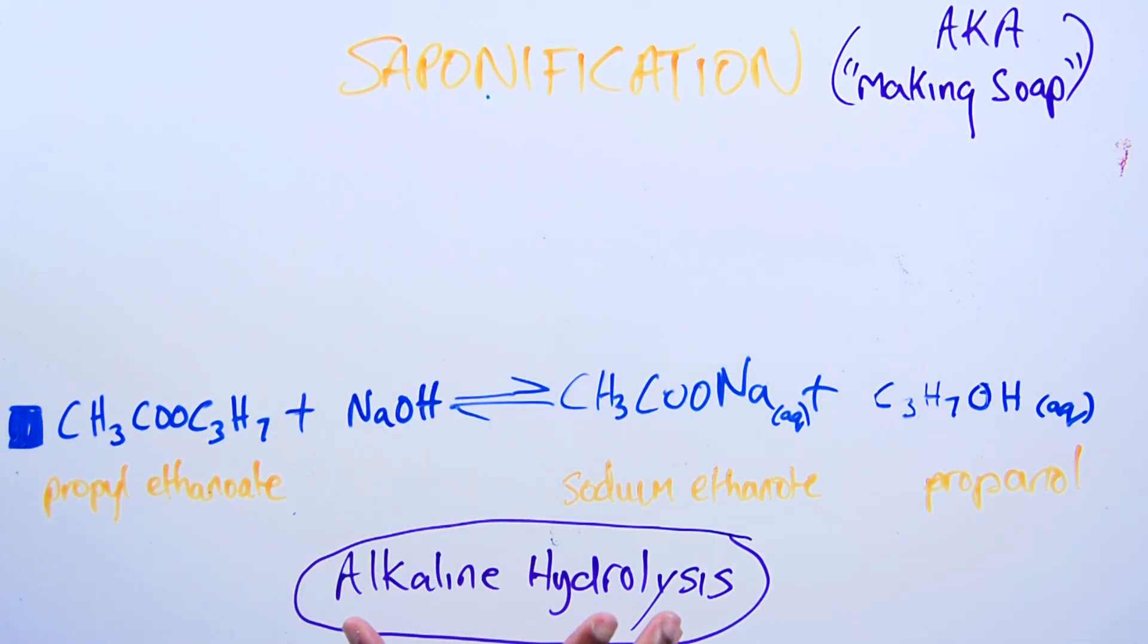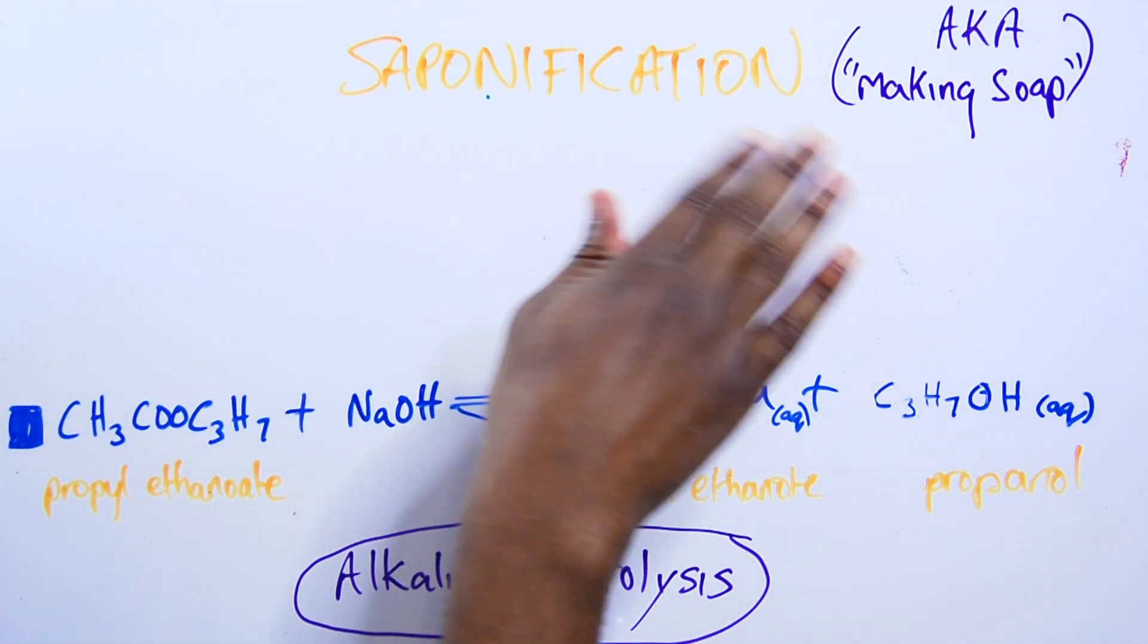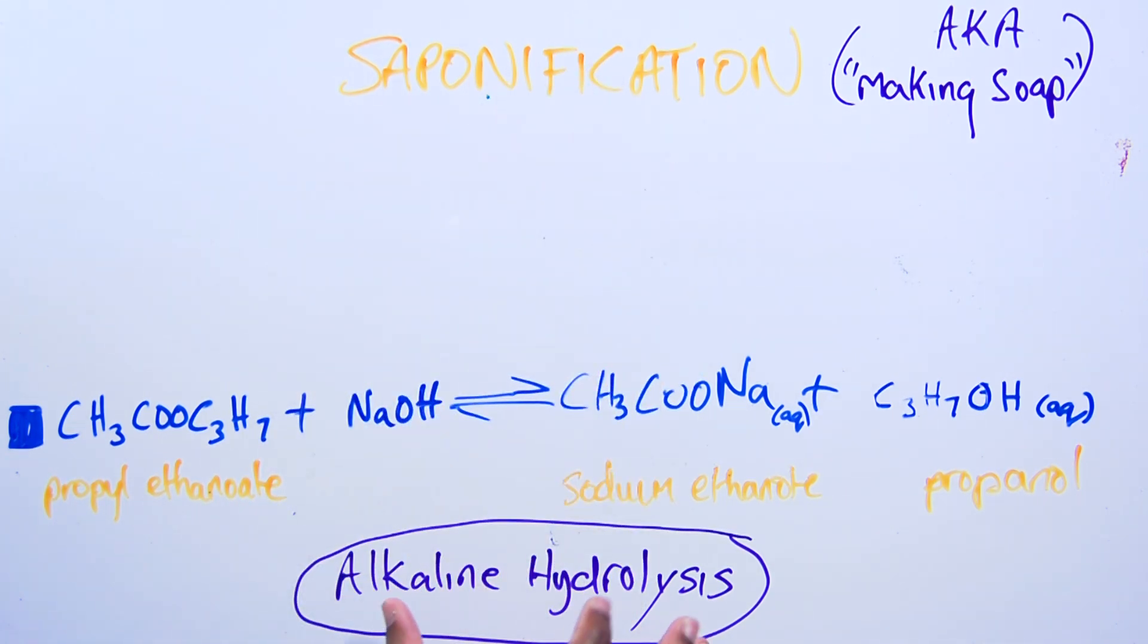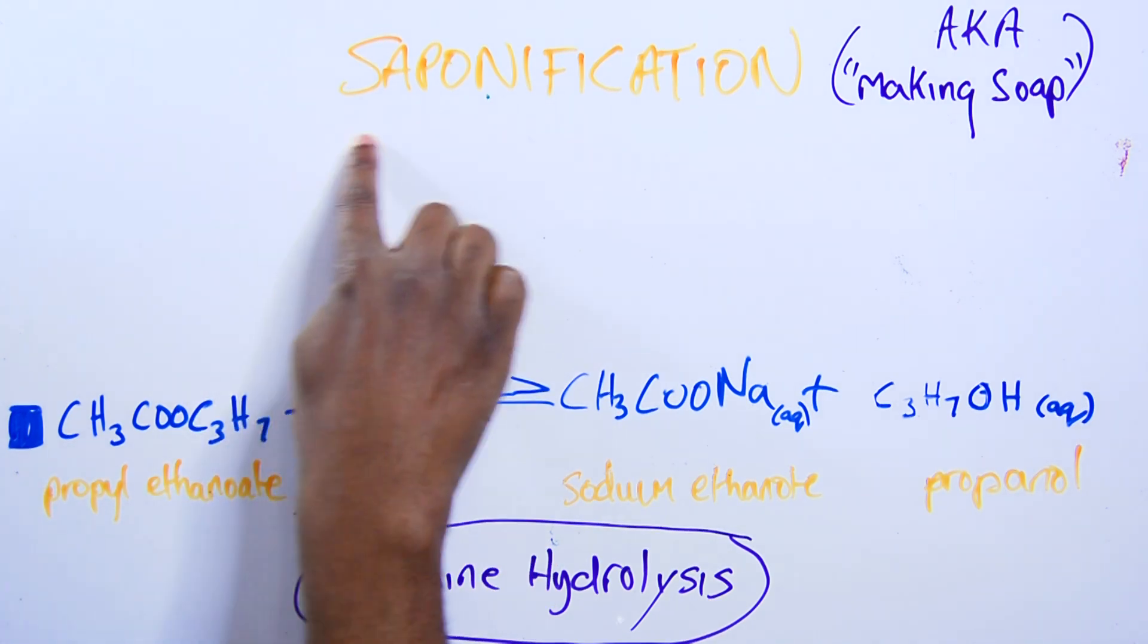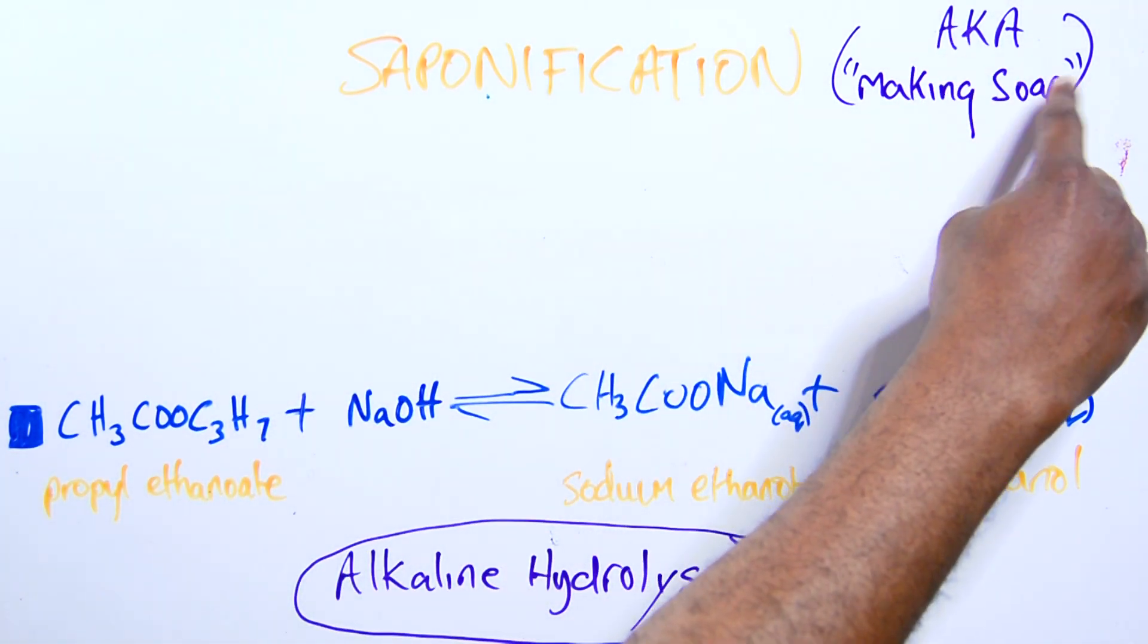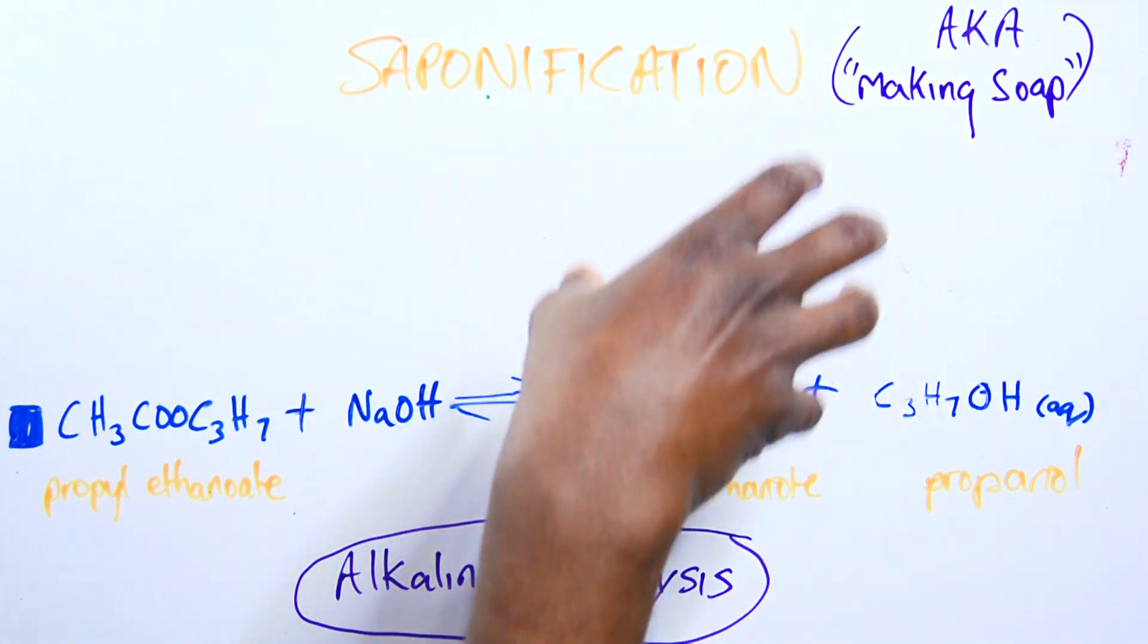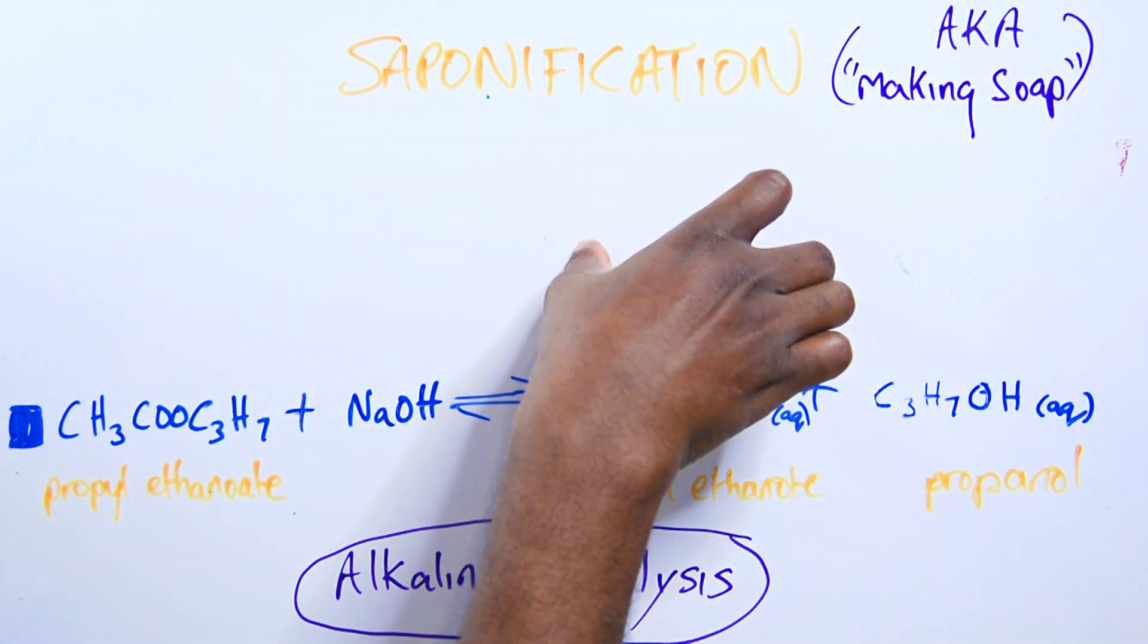One more thing about alkaline hydrolysis. When we do this with really long chain molecules, it's called saponification. And also known as making soap. We make soap. Let me show you.